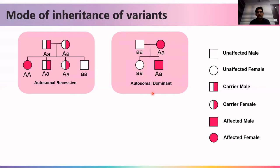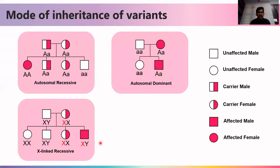In autosomal dominant mode of inheritance, if only a single copy of the gene carries the mutation or variant, the person will have the disorder. This can be inherited from an affected mother with the same heterozygous genotype, passed from mother to son. In X-linked recessive inheritance, females have two X chromosomes while males have only one. Even if one copy is affected, the female will be a carrier, but a male child who inherits the defective copy will be affected, while a female child will only be a carrier.